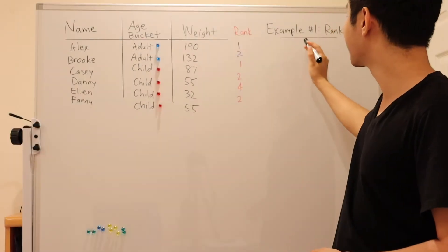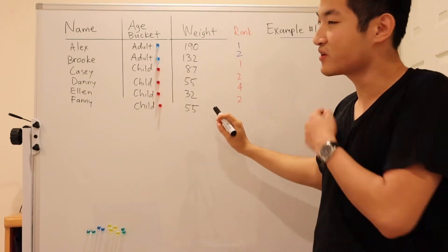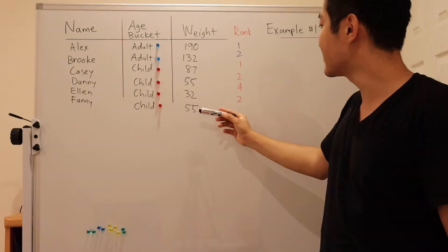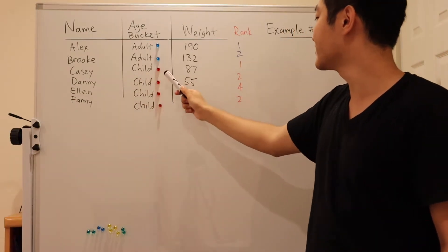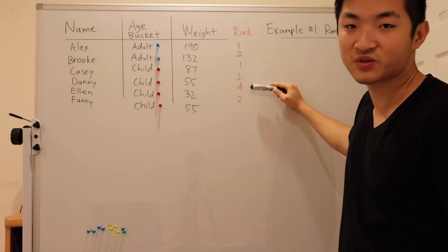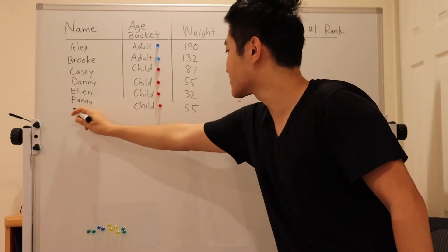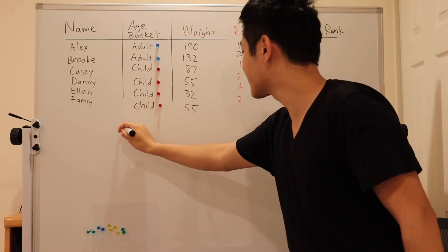Our first example is to compute the rank of each row relative to their age bucket. Casey is the heaviest child, followed by Danny and Fanny. So they both take ranking number two, and finally Ellen at number four. To keep this original table, we say select star.